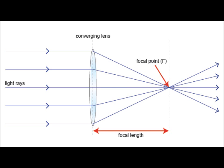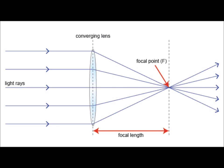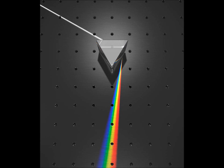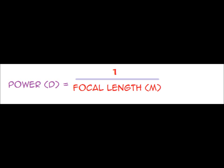Converging lenses and triangular prisms: the curvature of the lens means all the parallel rays hitting different parts of the lens are refracted towards the same focal point. Triangular prisms can refract light to form a spectrum, as different wavelengths of light refract by different amounts. White light is made up of many wavelengths that separate into a spectrum of colours. The more powerful the lens, the more strongly it converges, so the shorter the focal length. Power equals 1 over focal length.